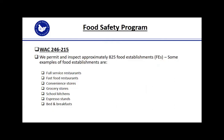We'll start today with the food safety program. This program is governed under WAC 246-215. We inspect and permit right around 825 food establishments annually. Some examples of these food establishments are full service restaurants, fast food restaurants, convenience stores, grocery stores, school kitchens, espresso stands, and bed and breakfasts, just to name a few.